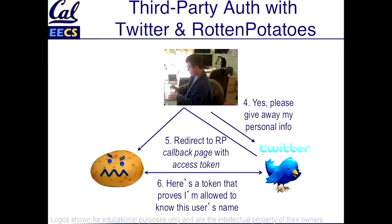And at that point, whenever Rotten Potatoes wants to do something on my behalf on Twitter, it basically presents the token and says, look, here's the proof. You made this token. No one else could have made it. Here's the token that presumably proves that this user said it's OK to act on their behalf on the Twitter site.